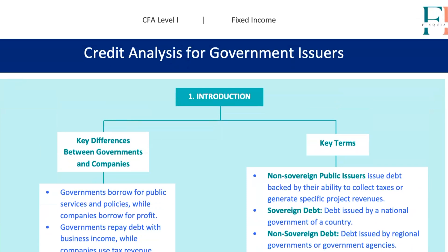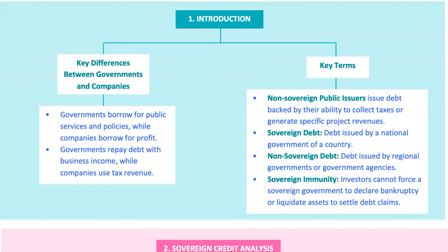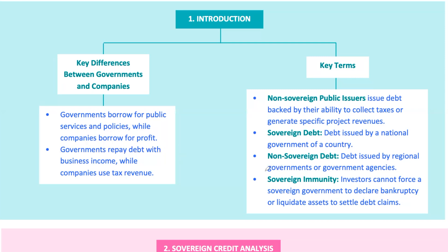All right, everyone. Today we're stepping into the world of government credit risk. When companies issue bonds, they're borrowing to grow and generate profits. Governments, on the other hand, issue debt to fund public services like education, infrastructure, and health care. And unlike companies, you can't just drag a government into bankruptcy court if they miss a payment. They've got something called sovereign immunity.